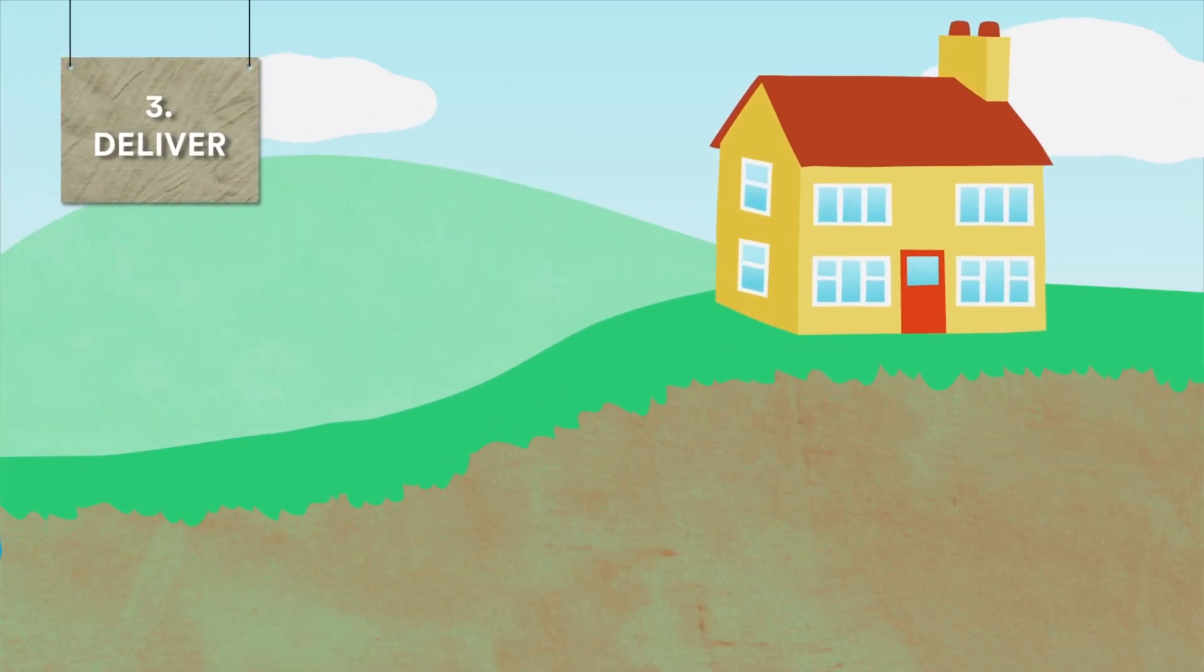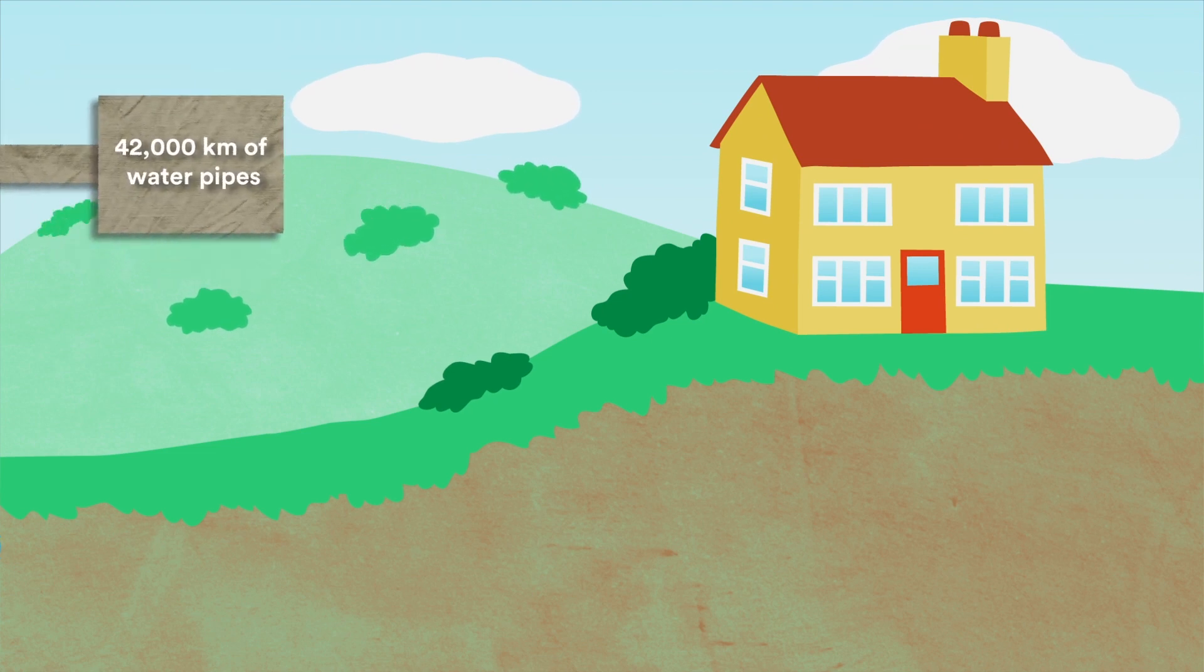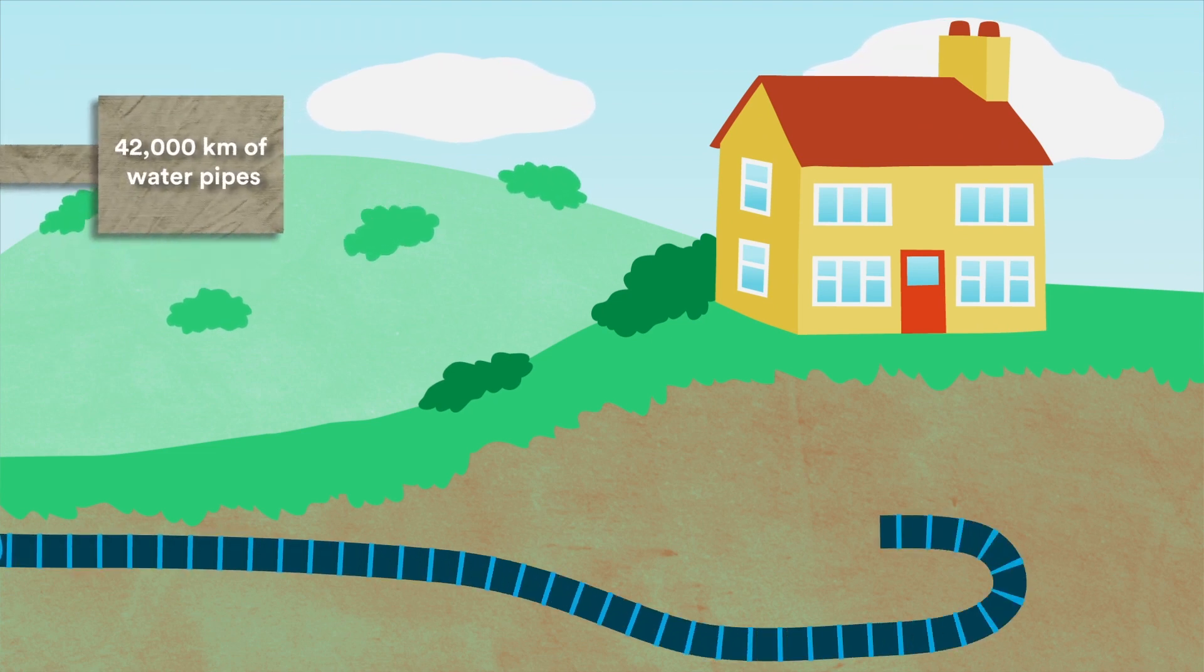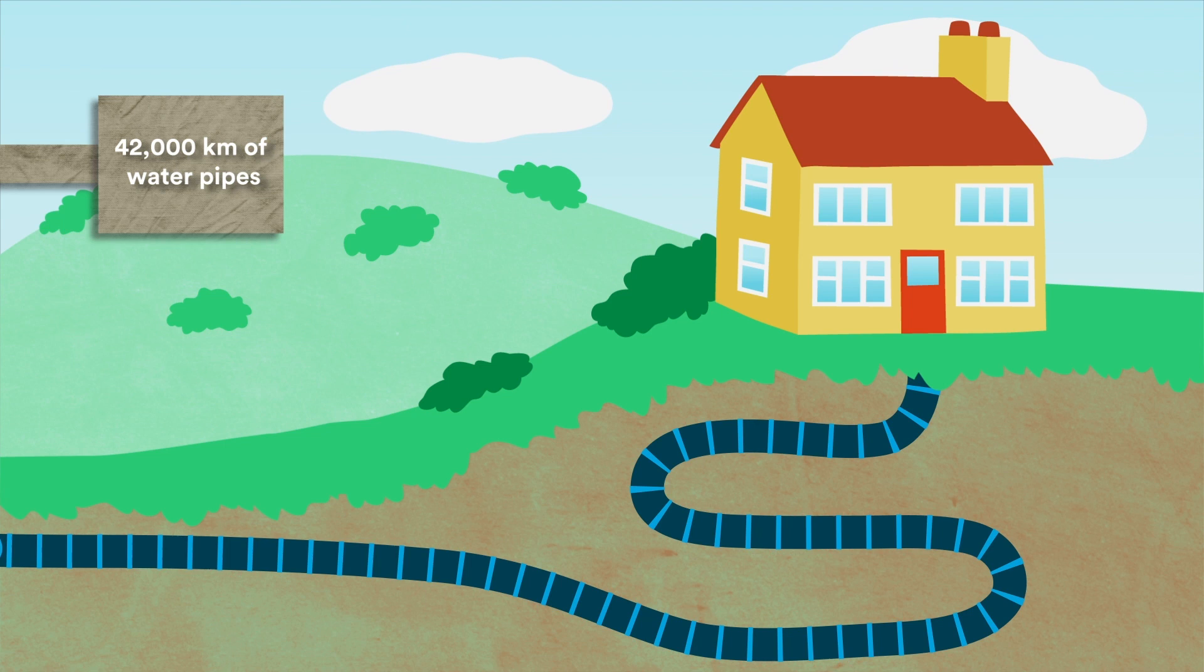3. Deliver. United Utilities looks after 42,000 kilometres of water pipes. That's enough pipes to wrap around the world.